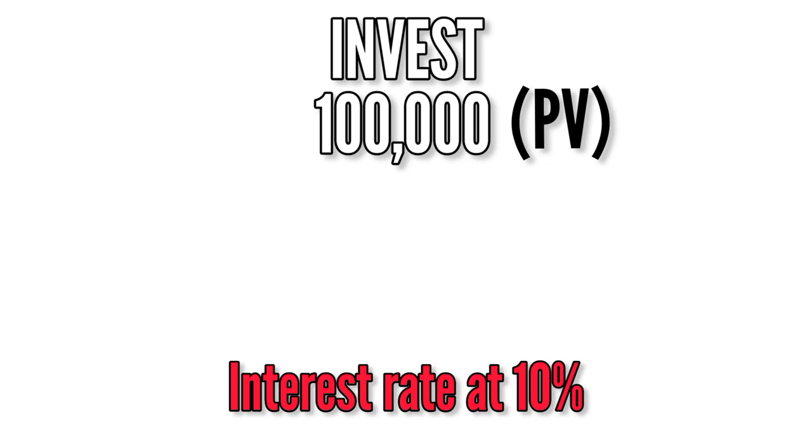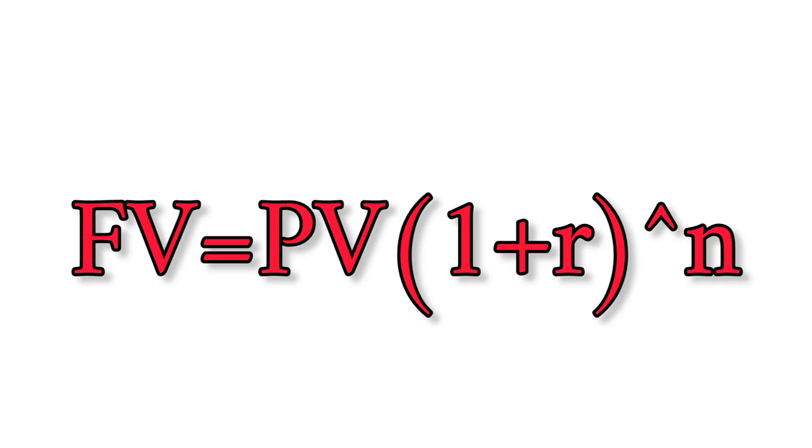If you have 100,000 today and you're told that the interest rate which you use to calculate the value is 10%, what you need to do is to know this formula that says future value is equal to present value times one plus interest rate raised to power the number of years involved.